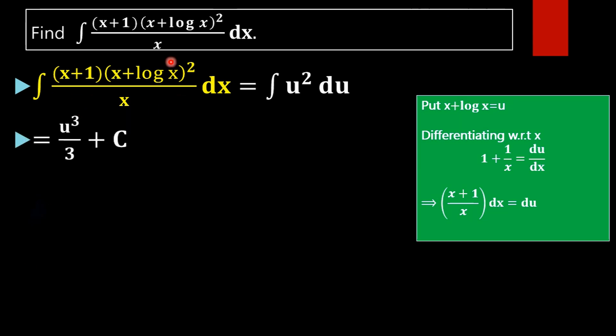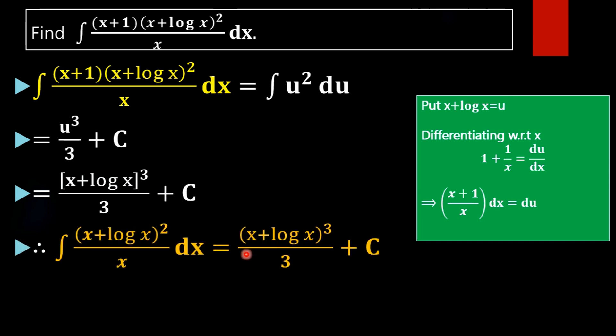Our function reduced to integral u² du. Then what is integral of u² du? That is u³/3 + C. What is u? x + log x. So what is the final result? (x + log x)³/3 + C.